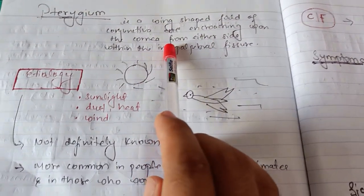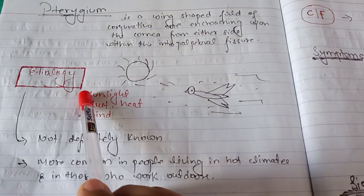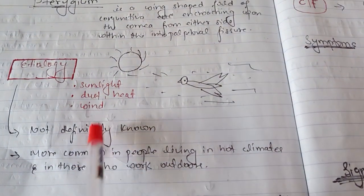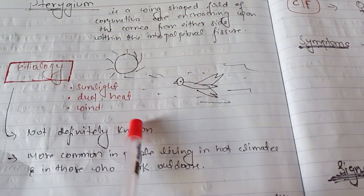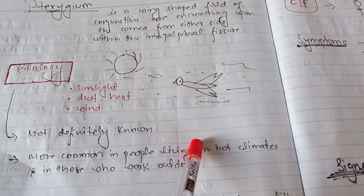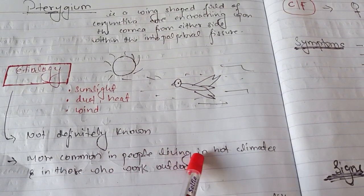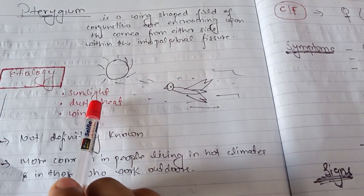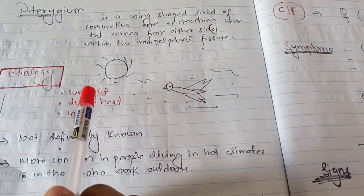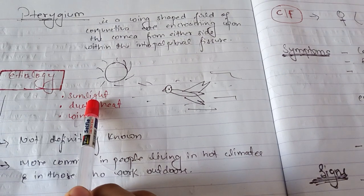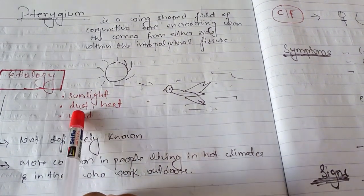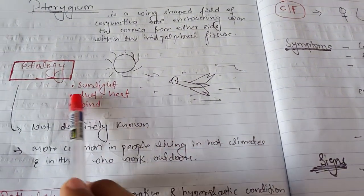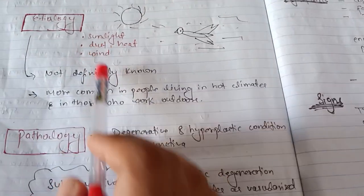Moving towards etiology, the etiology of pterygium is not known, but it's more common in people living in hot climates and those who work outdoors. There are many factors which lead to pterygium, and there are four main factors: sunlight and mainly UV rays, dust, dry heat, and wind.